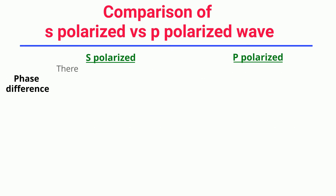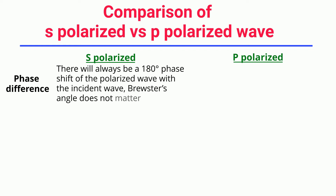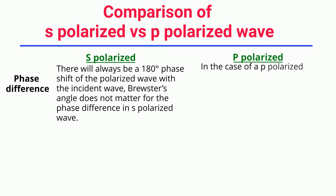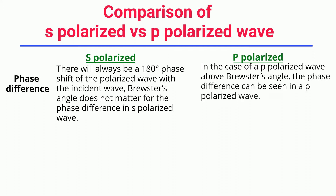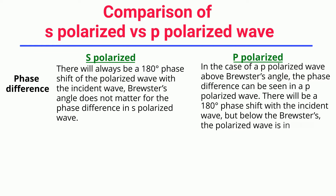Phase Difference: There will always be a 180° phase shift of the polarized wave with the incident wave; Brewster's angle does not matter for the phase difference in S-Polarized waves. In the case of a P-Polarized wave above Brewster's angle, a phase difference can be seen — there will be a 180° phase shift with the incident wave. Below Brewster's angle, the polarized wave is in phase with the incident wave.